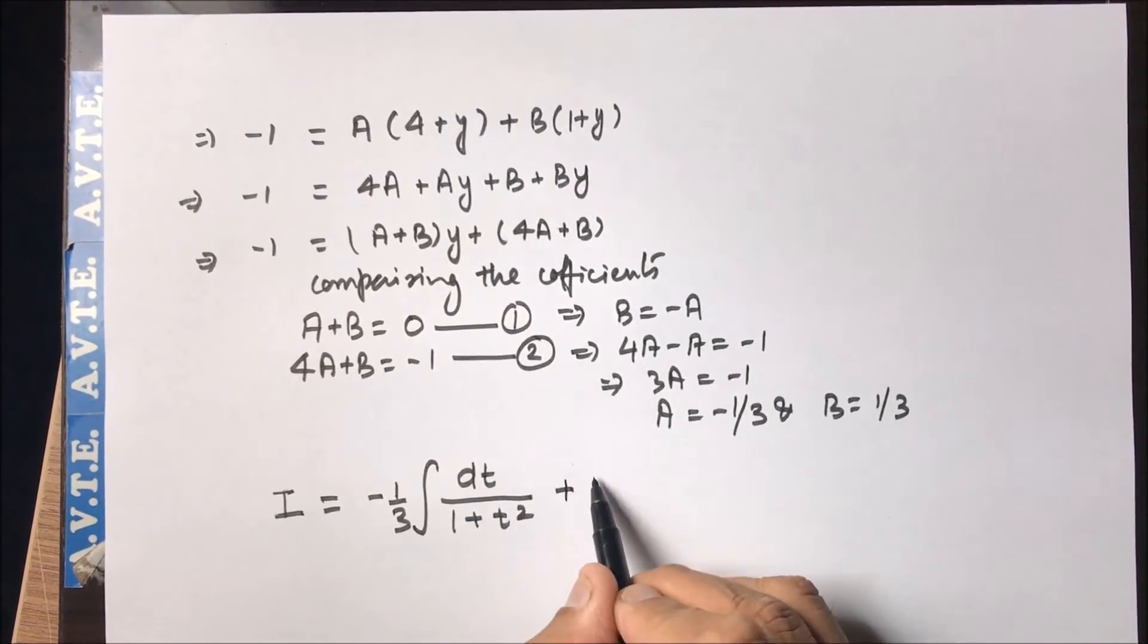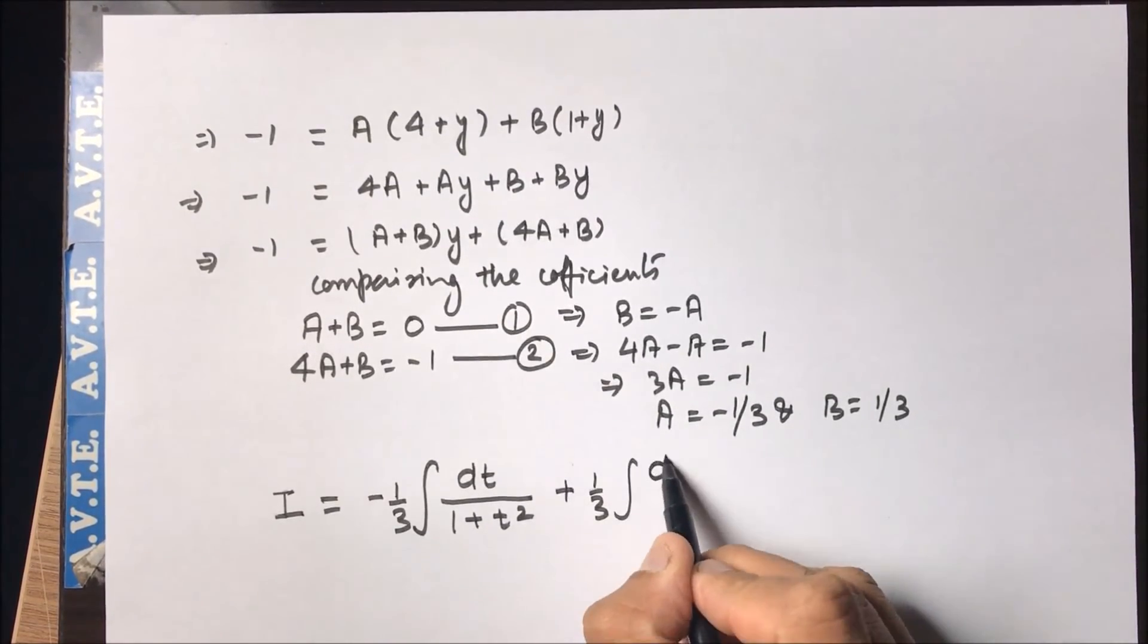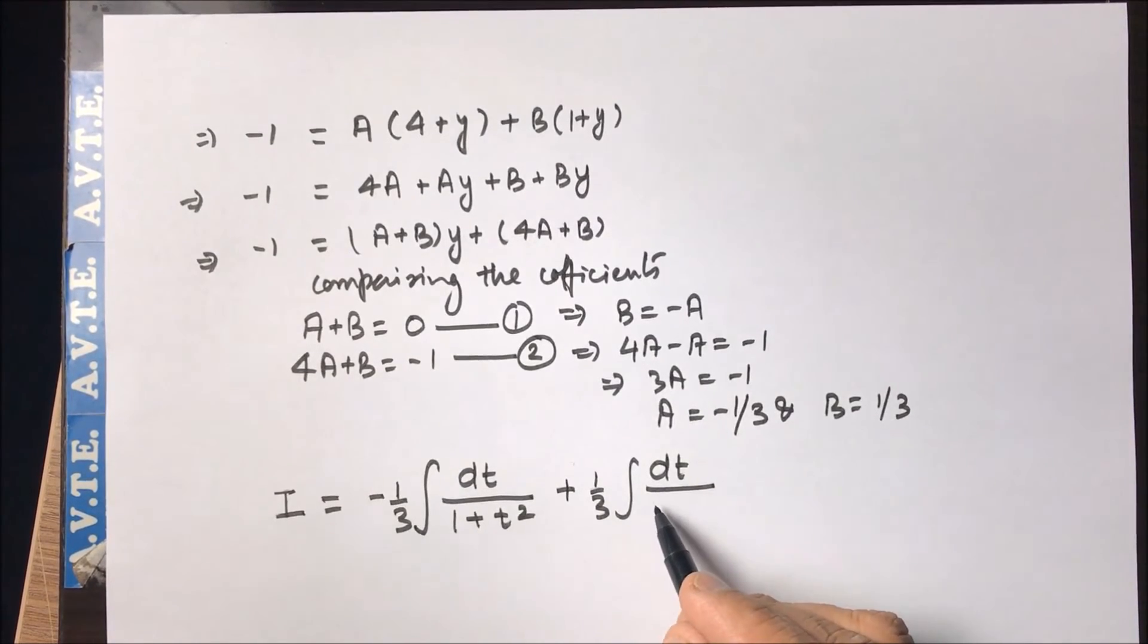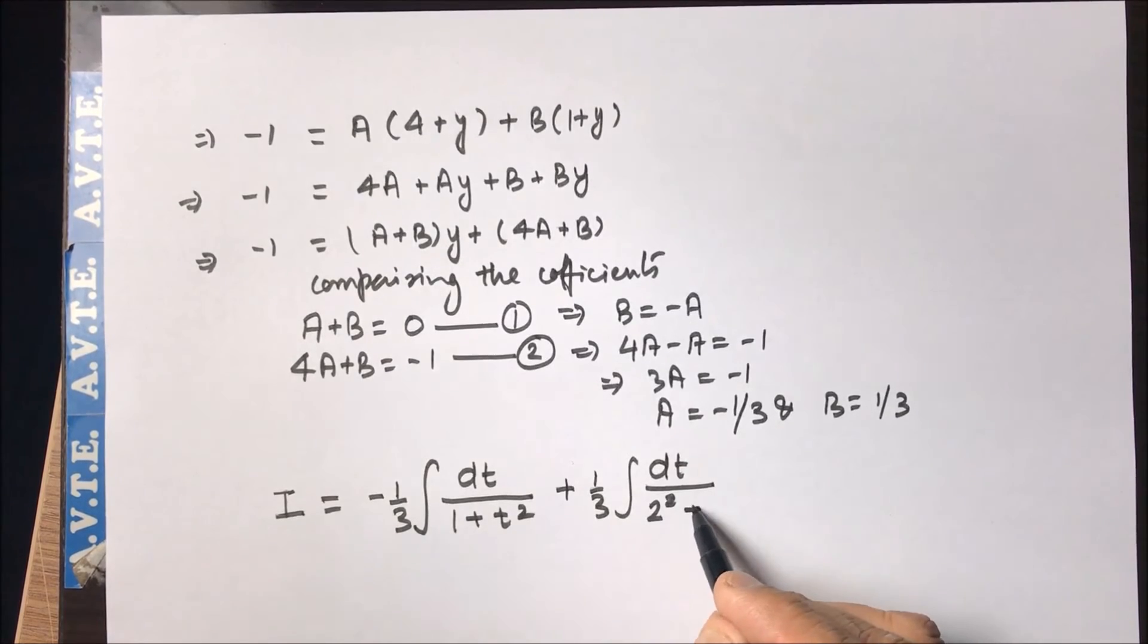And same way, if you remember that was y plus four, so it will turn to t squared plus. So it will be two square plus t square.